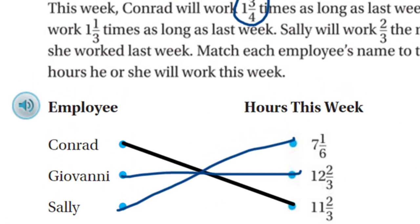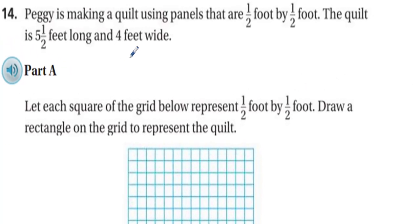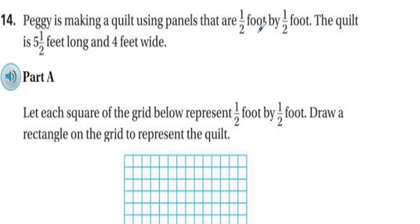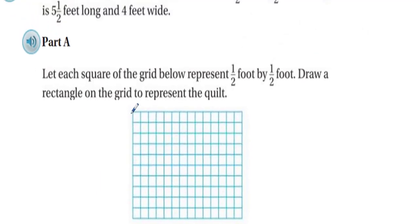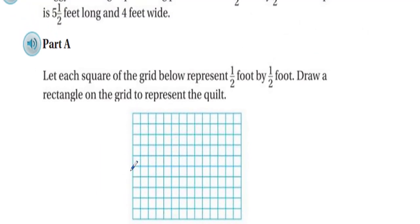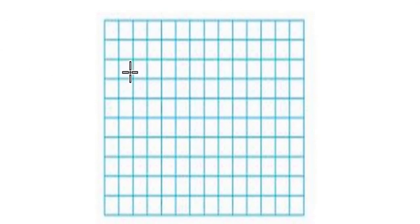Next problem: Peggy is making a quilt using panels that are a half-foot by a half-foot. The quilt is five and a half feet long and four feet wide. Let each square of the grid represent one-half foot by one-half foot. Draw a rectangle on the grid to represent the quilt. Each square on the grid is a half-foot by half-foot. Going across, we have seven feet but only need five and a half. Vertically we have five feet but only need four.